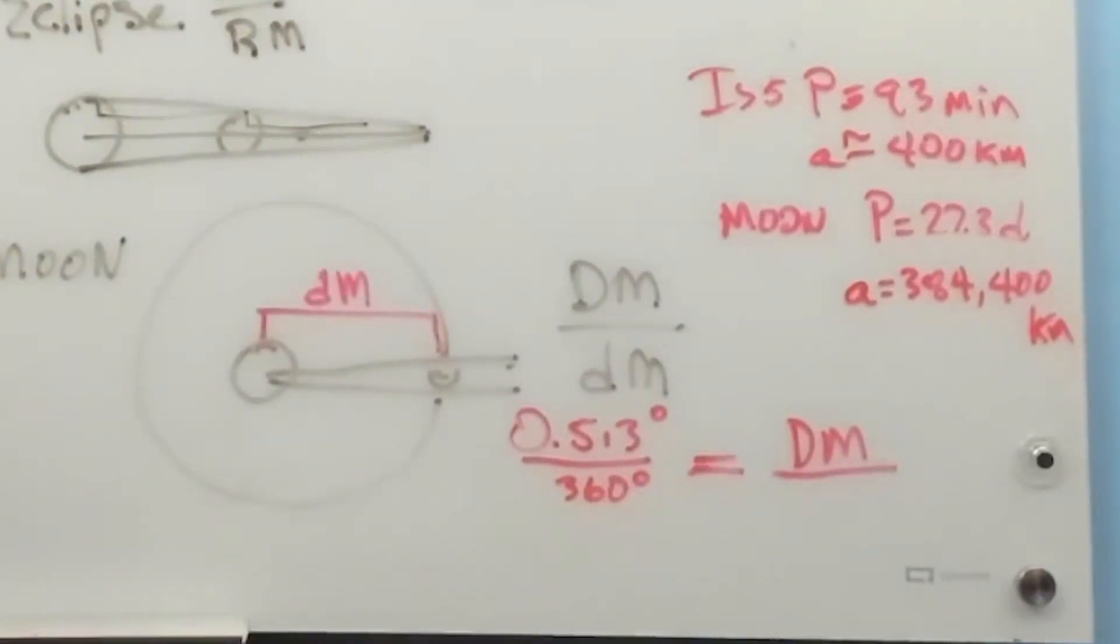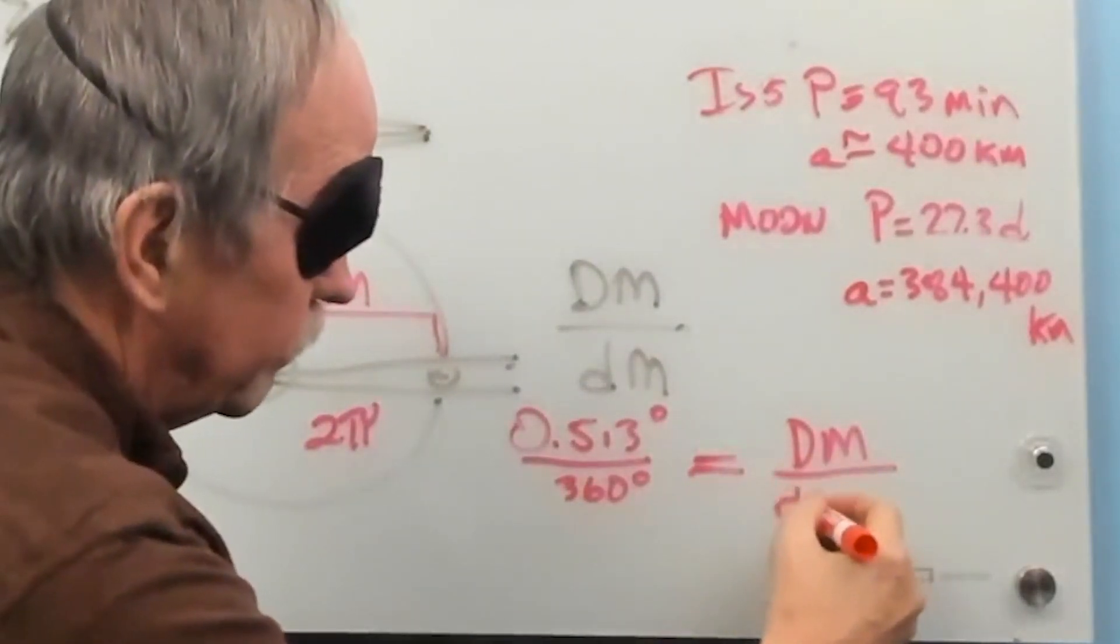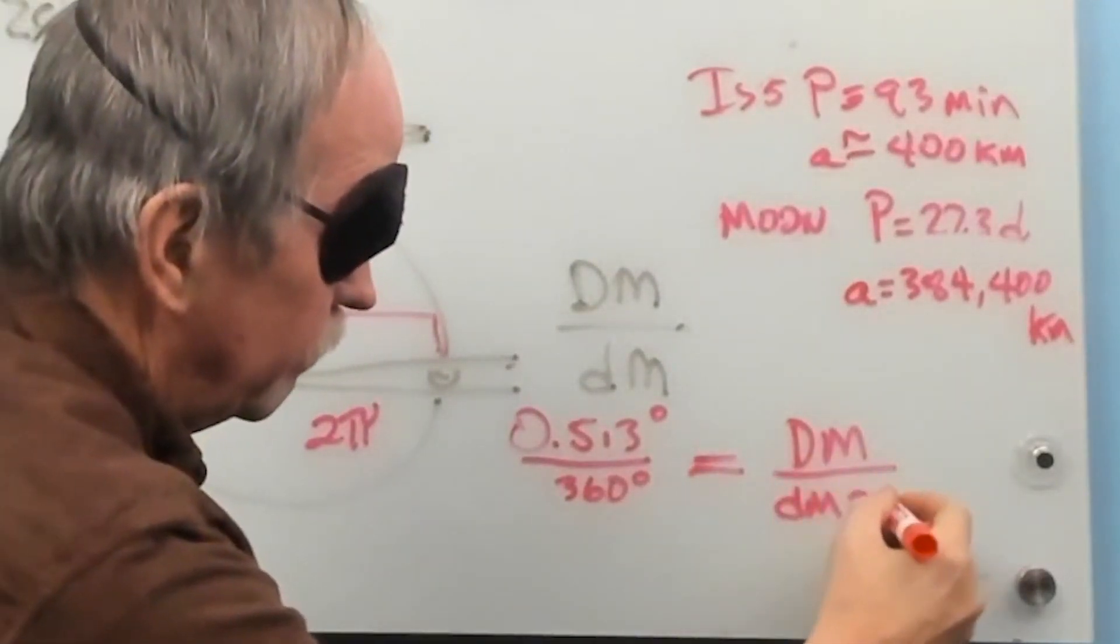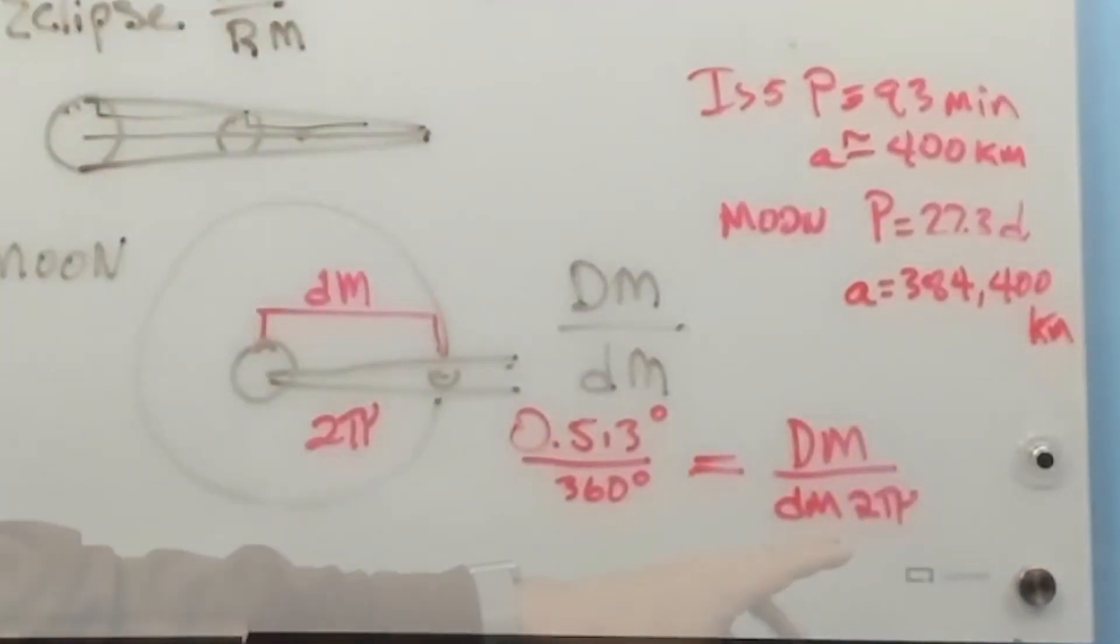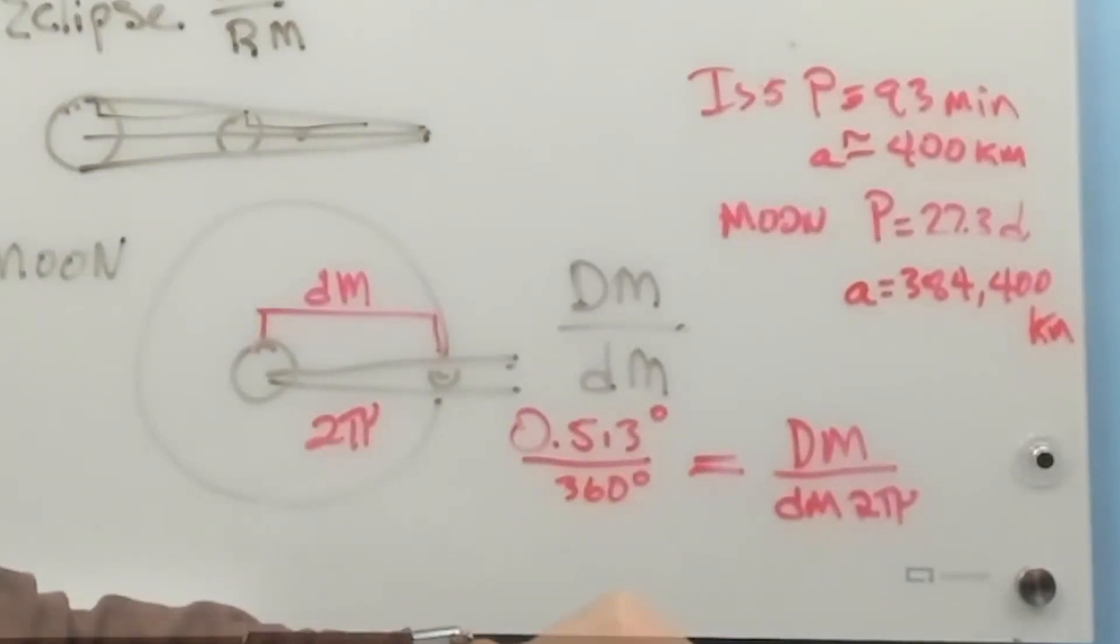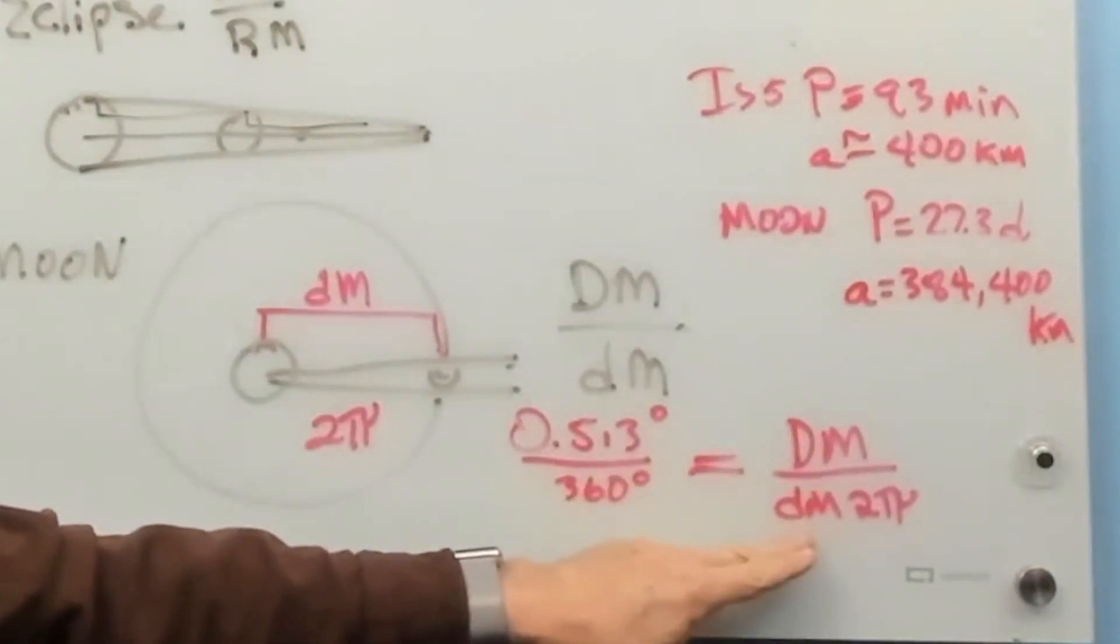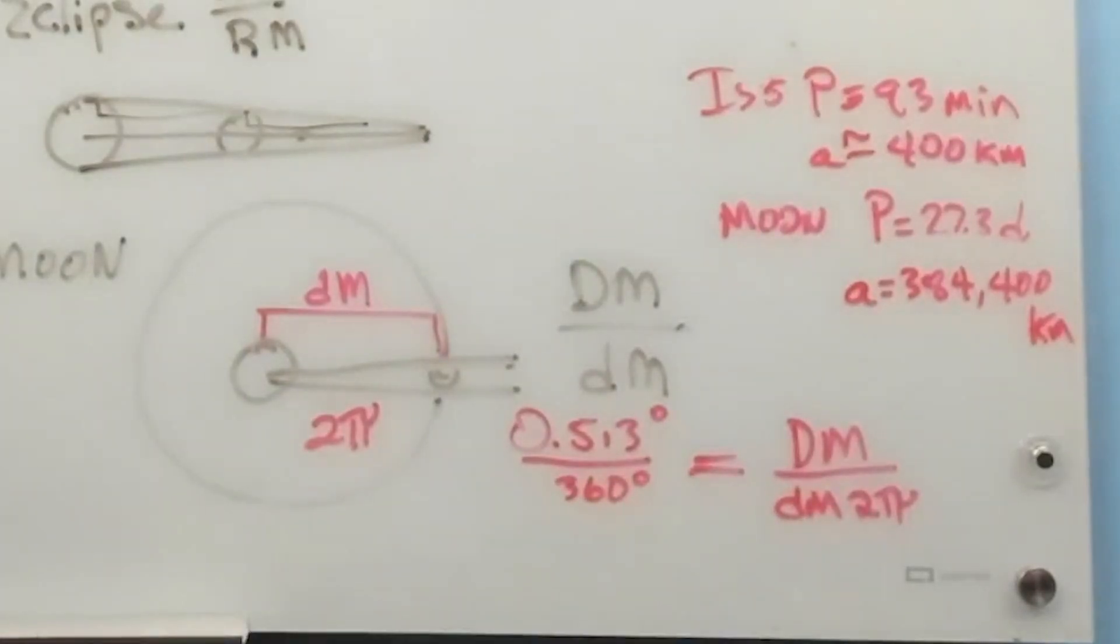Well, what is the orbit of the Moon? It's the distance to the Moon times 2pi. So, we can put that right here. If we take 2pi and move it up to here, we can get the ratio of the diameter of the Moon to the distance to the Moon. So, let's go ahead and do that real quick.